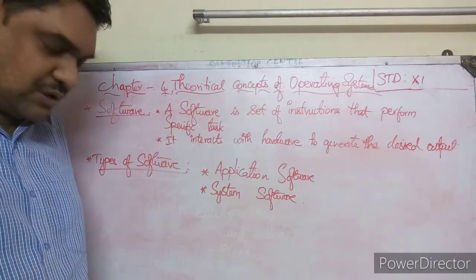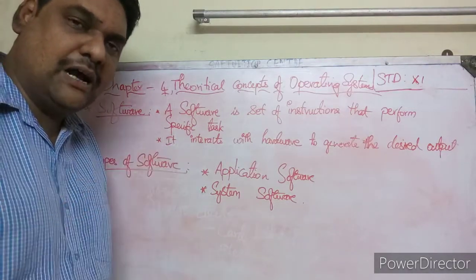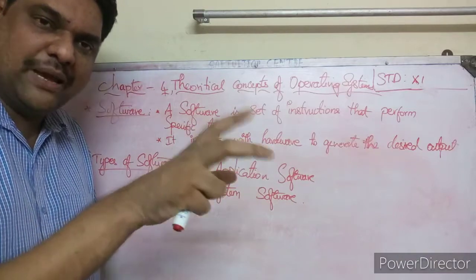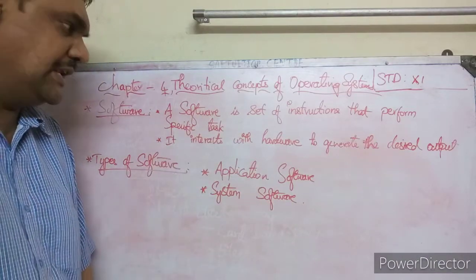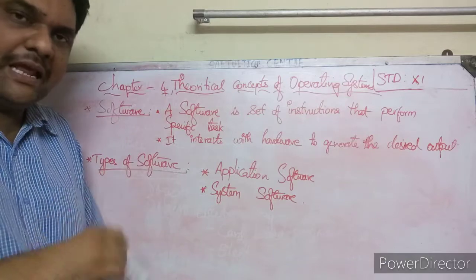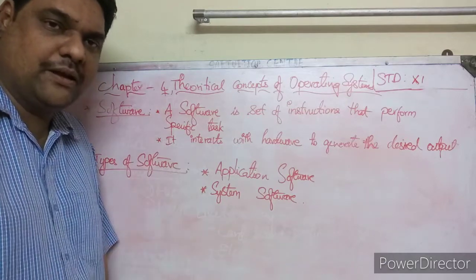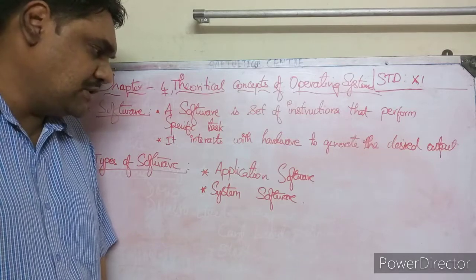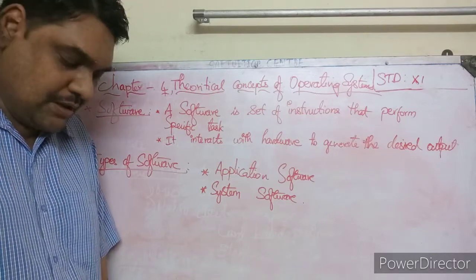So what software does is: the instructions basically interact with the hardware and make the hardware work. There are two types of software: application software and system software.